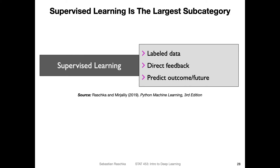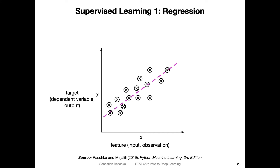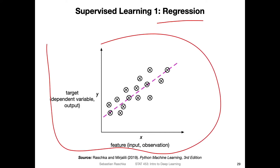A little bit more about supervised learning. Supervised learning is the largest subcategory of machine learning, focused on labeled data. You may have already seen an example of supervised learning from other statistics classes — that would be regression. Here is a sketch of a linear regression model with one input, or what we call in machine learning a feature. The x variable, the explanatory variable, we call the feature, and the target — the dependent variable — is on the y-axis.